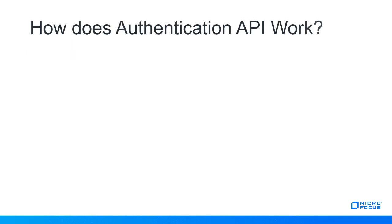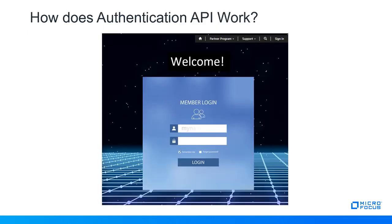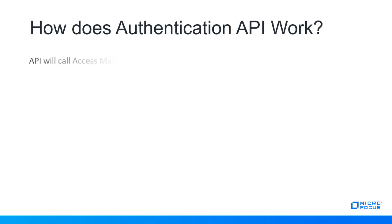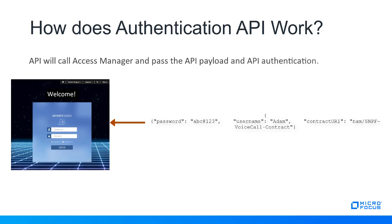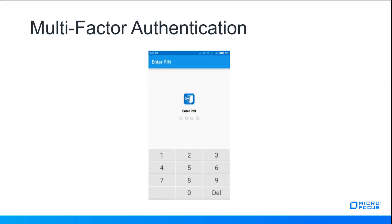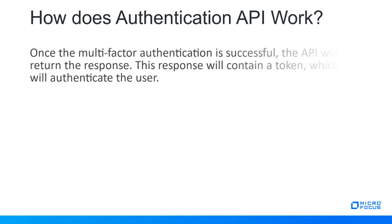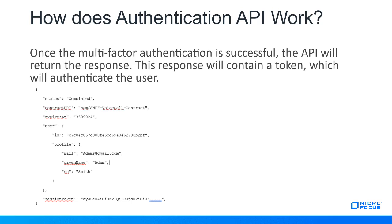How does the Authentication API work? Customers have customized their user portal with first factor authentication — username and password. Users enter their username and password to authenticate and click login to sign in. The API will call the Access Manager and pass the API payload and API authentication. Access Manager will then trigger second factor authentication. You are authenticated using smartphone authentication — enter the PIN and tap Accept to login to the portal. Once multi-factor authentication is successful, the API will return a response containing a token which will authenticate the user.